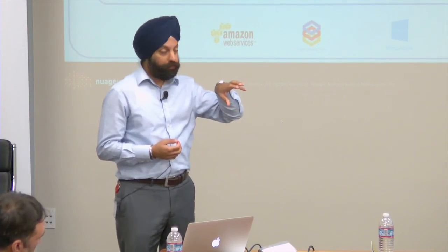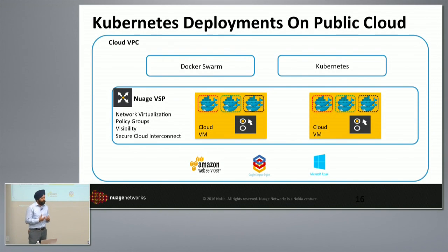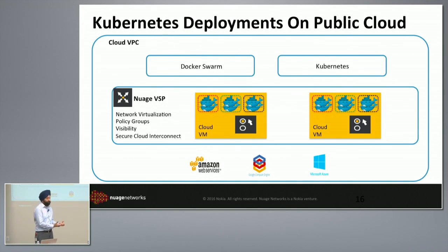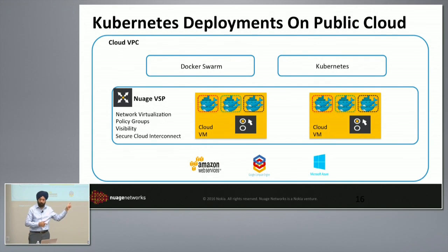Here's another deployment scenario: many customers want to deploy containers in the cloud. Our overlay-based architecture means we can easily be deployed in any cloud infrastructure. We already have POCs in place because people don't want to be locked down in where they deploy things. The key point is that customers want the same solution on-prem and off-prem — they don't want to learn one approach for the data center and another for the cloud. There's full parity in what you can do on-prem and off-prem.